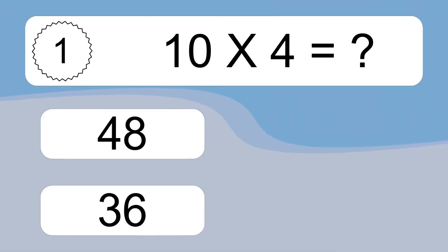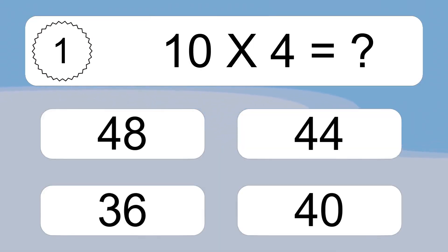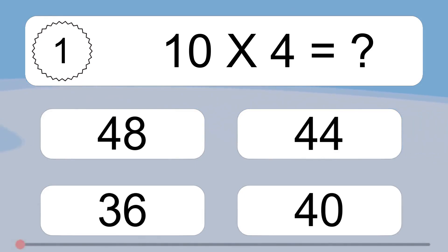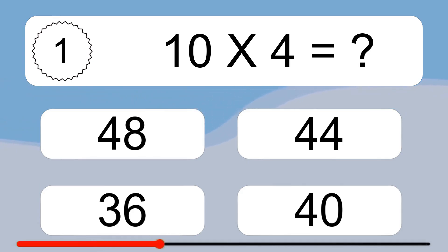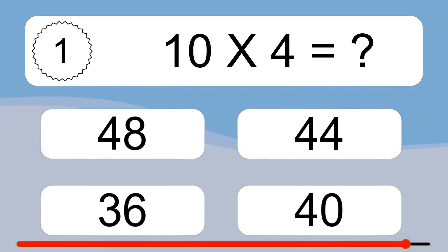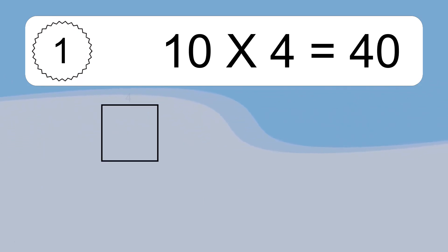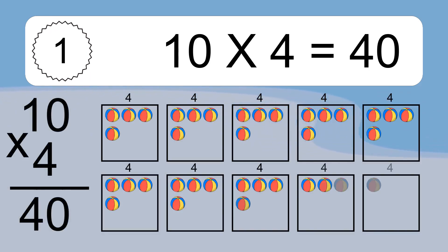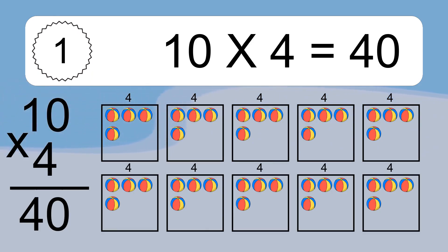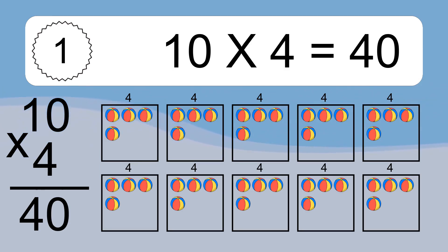10 times 4 equals what? 10 times 4 equals 40. We have 10 boxes, and each box has 4 colorful balls inside. If you count all the balls in all the boxes together, you will have 10 times 4 balls. This equals 40 balls.